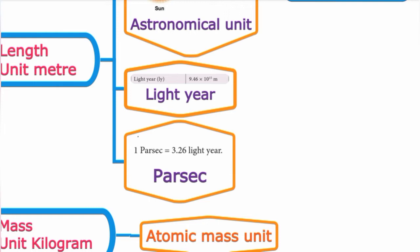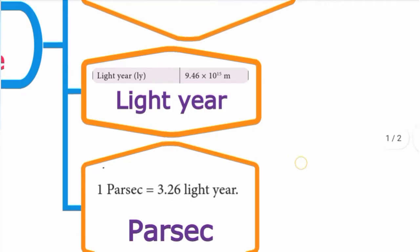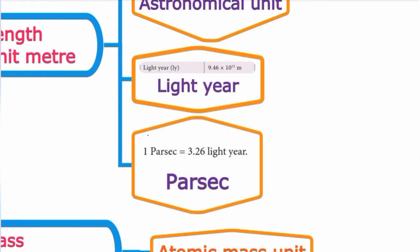Another unit is the Light Year, which is the distance traveled by light in one year in vacuum. One light year equals 9.46 × 10¹⁵ meters.